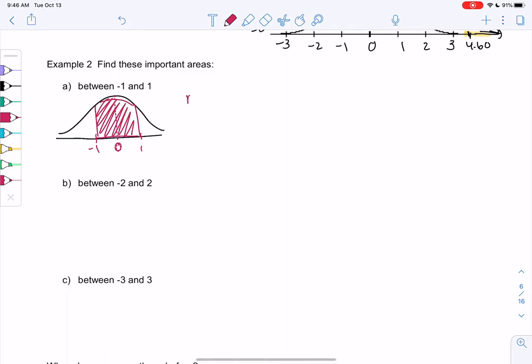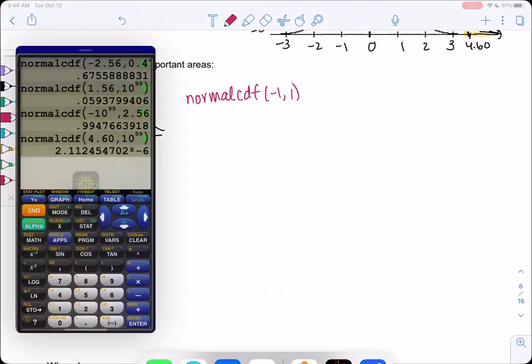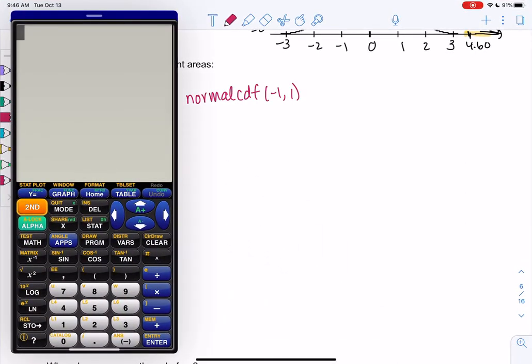So we're going to use normal CDF, negative 1 to 1. And we'll pull out that calculator. Negative 1 to 1, and we get 0.6827. I'm going to always do 4 decimal places.